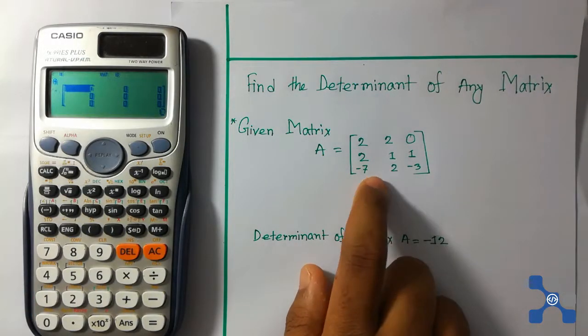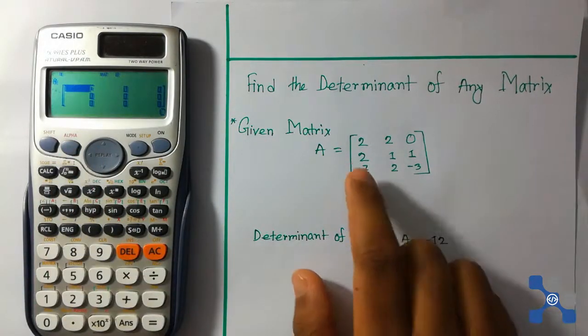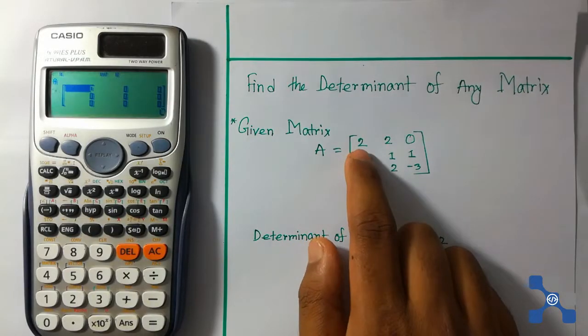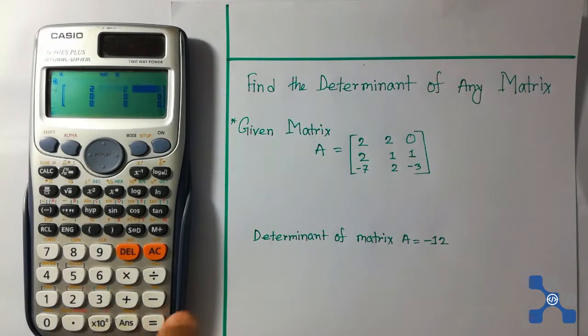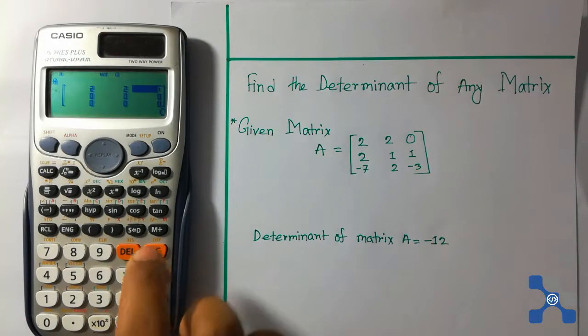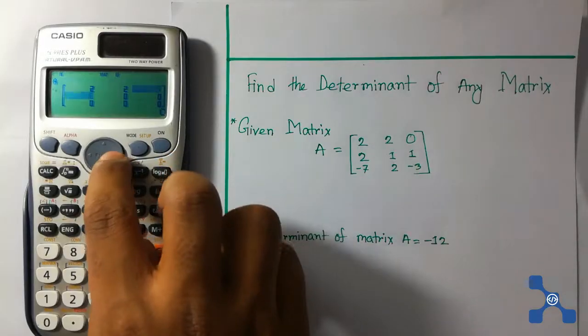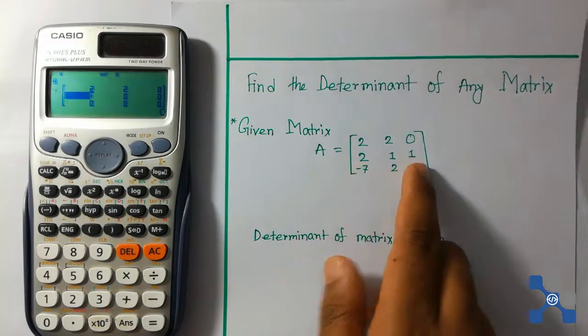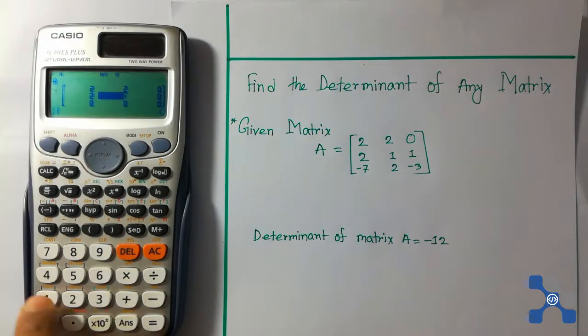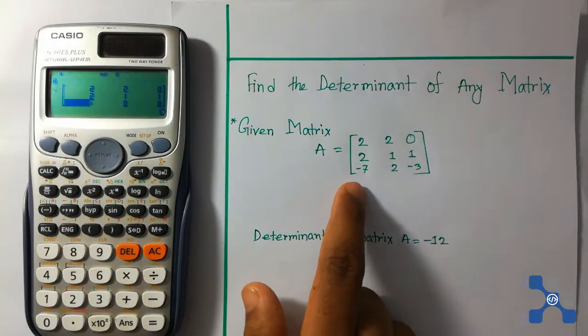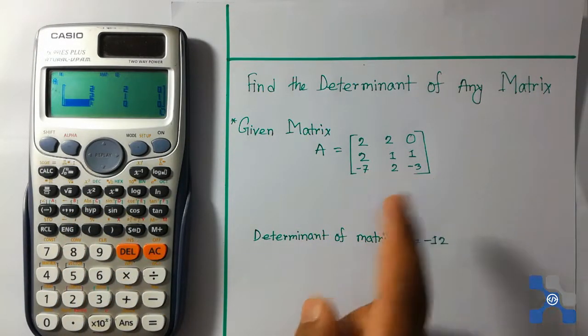Now put these elements in the calculator. Our first row element is 2, 2, 0. Second row is 2, 1, 1. And third row is -7, 2, -3.